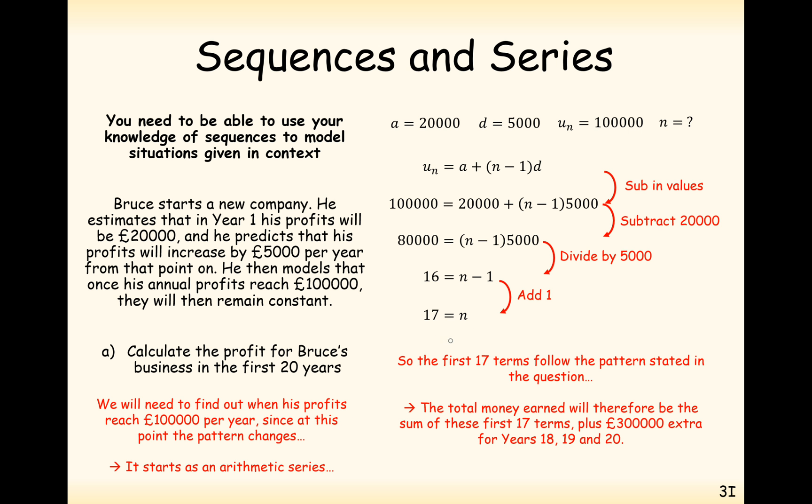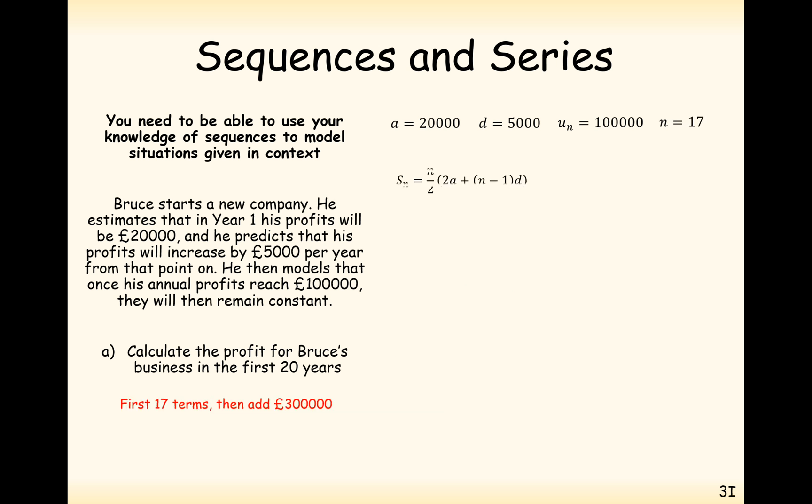What we'll have to do is use the arithmetic series summation formula up until 17, and then we'll just add on years 18, 19, and 20 separately for an extra £300,000. The reason we have to do that is because the pattern changes after 17 years. Now substituting in n equals 17 into the arithmetic progression formula, we get £1,020,000, plus the £300,000 from the extra years, and we get £1,320,000.